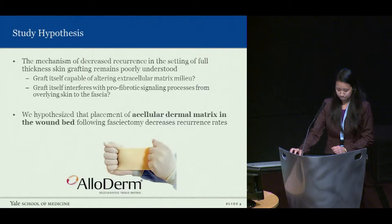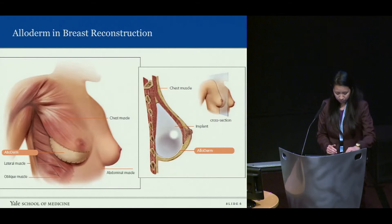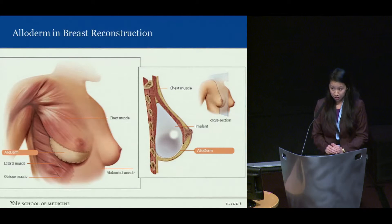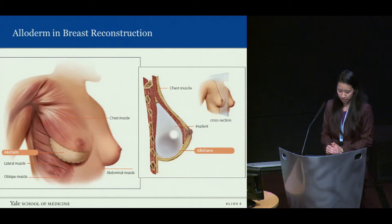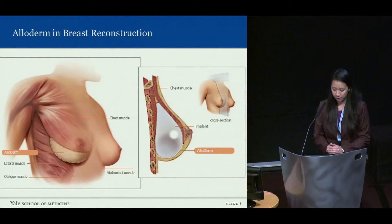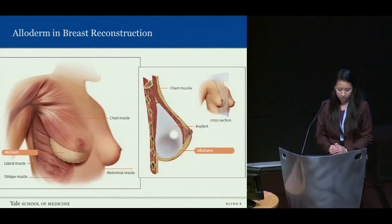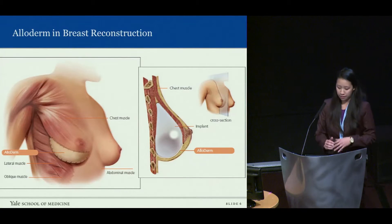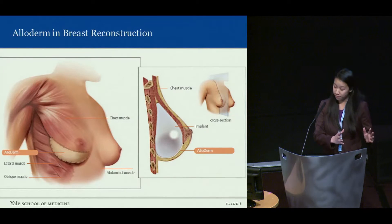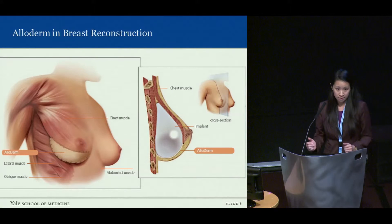The reason why we chose Alloderm is that it's been really well characterized in the breast reconstruction literature. Alloderm is commonly used in the setting of implant-based reconstruction, and a lot of clinical studies have shown that the use of Alloderm in implant reconstruction is associated with lower rates of capsular contracture. The link between these findings and Dupuytren's contracture is that the mechanism of contraction in both cases is the same — it's mediated by myofibroblasts and excess collagen formation.